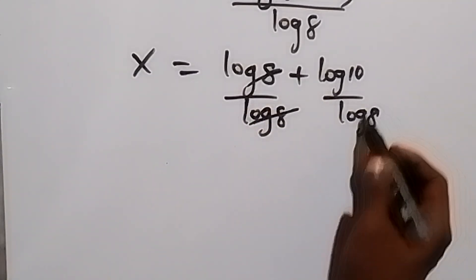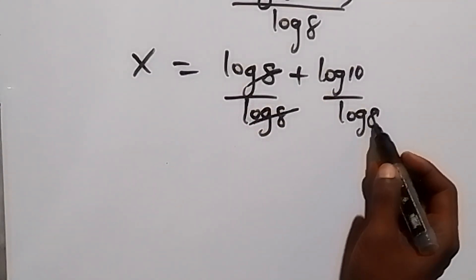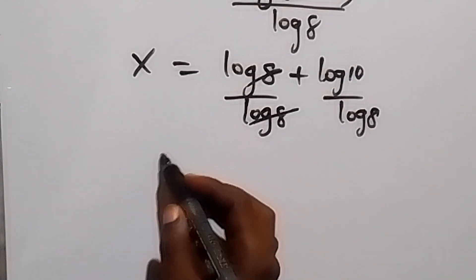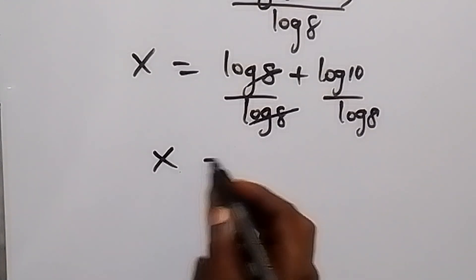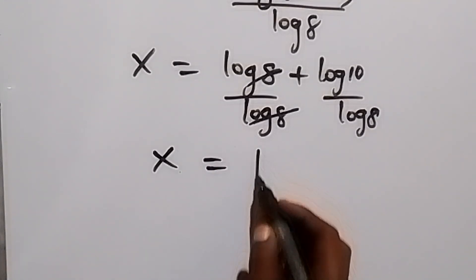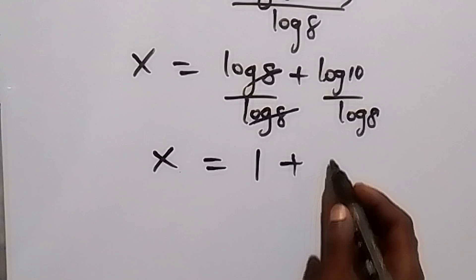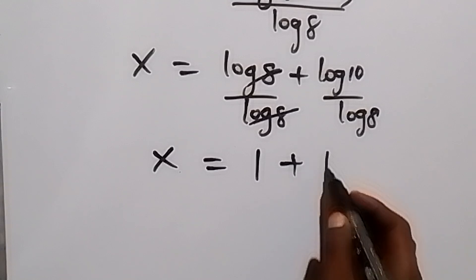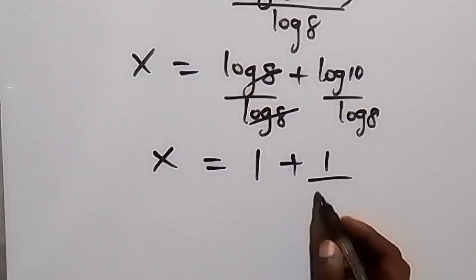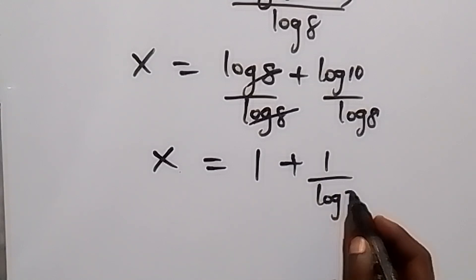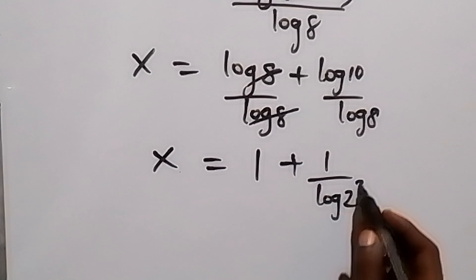We can also express log 8 as log of 2 raised to the power 3. So this gives 1 plus log 10 is 1, over log of 2 raised to the power 3.